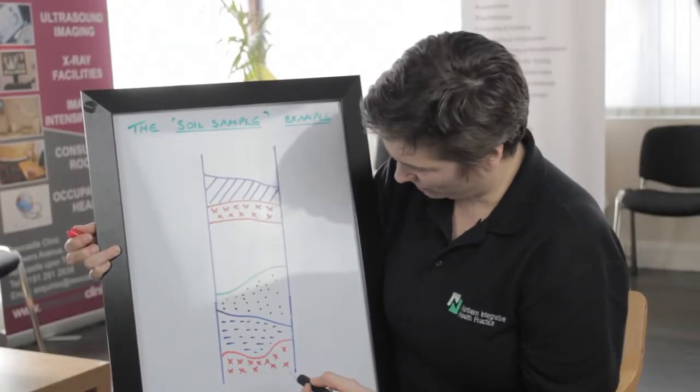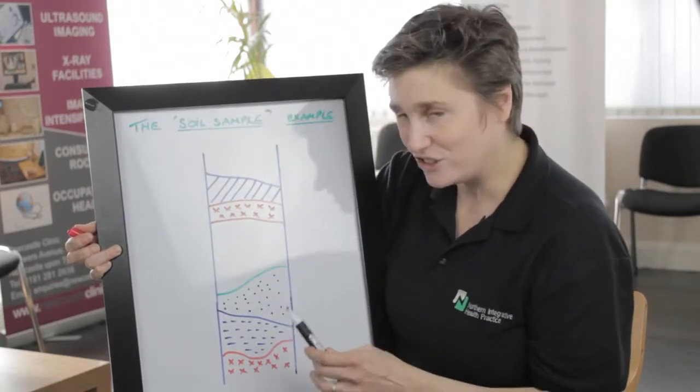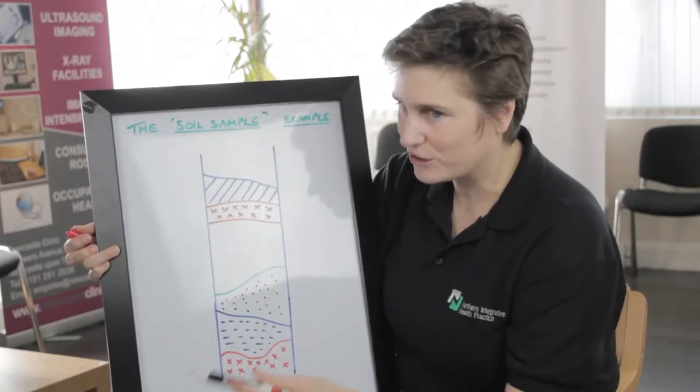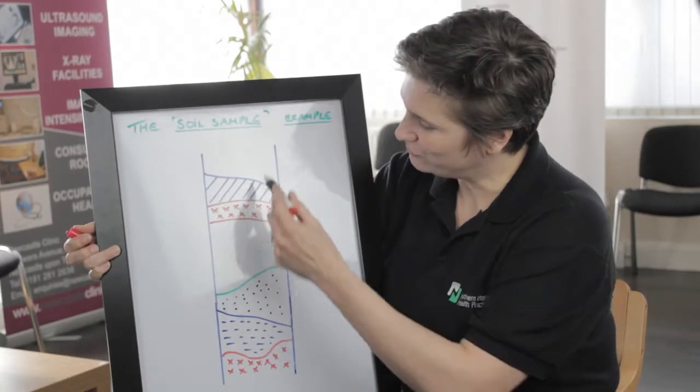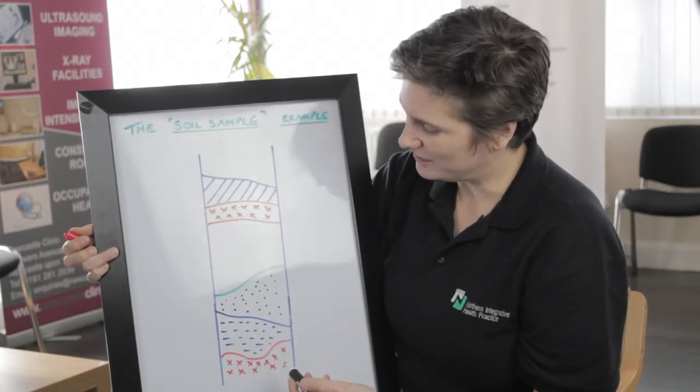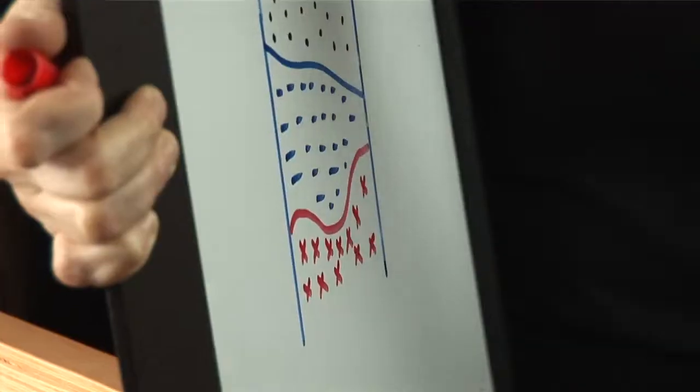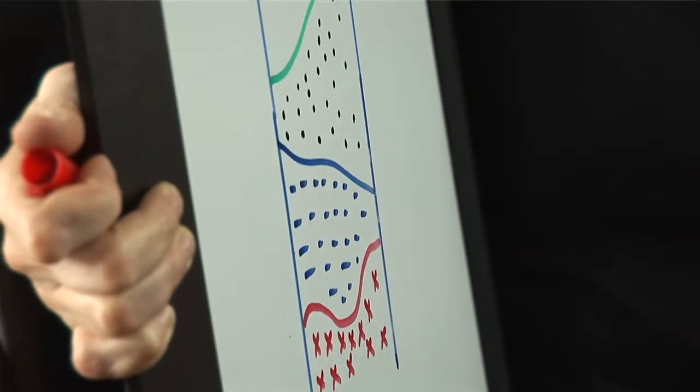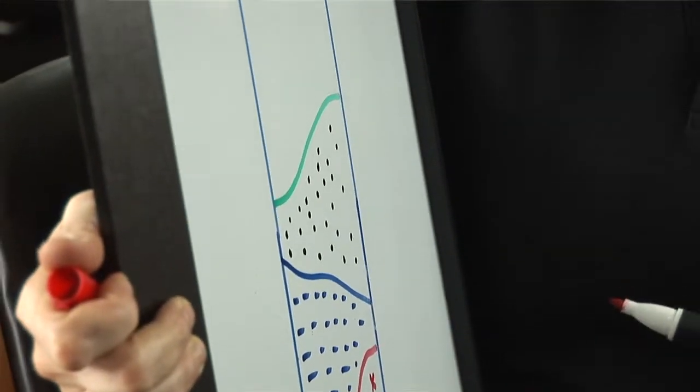This comes from the fact that my dad is a geologist, and it used to be on the kitchen table that you would see a soil sample. There are lots of different levels over often centuries and thousands of years showing the behavior of what was going on at that time. The same analogy can be used for a human being.